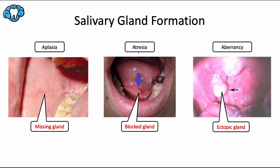Salivary gland atresia is congenital blockage or absence of the opening of a major salivary gland duct or part of the duct itself. Most commonly involved is the submandibular salivary gland duct, also called Wharton's duct. You can see this arrow pointing to a blocked Wharton's duct in this image.